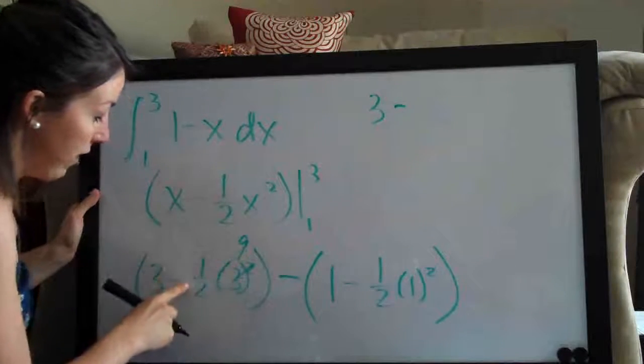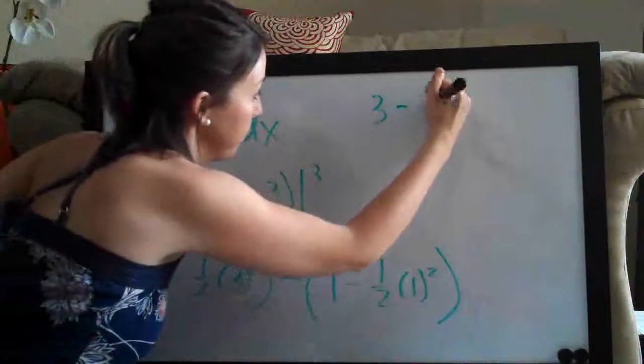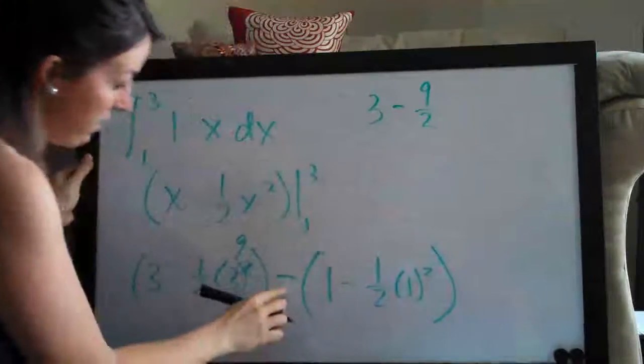So 9 times 1 half is 9 halves. And then minus 1.